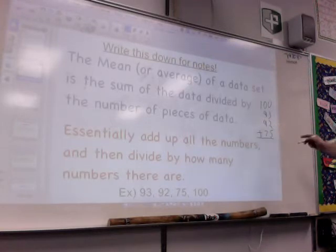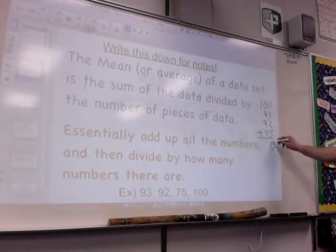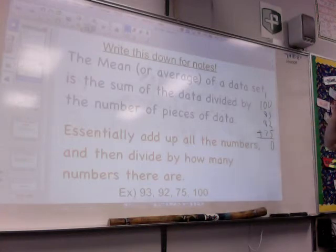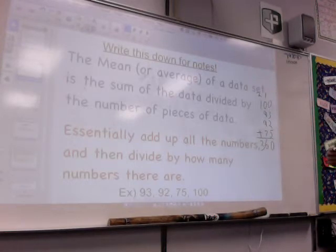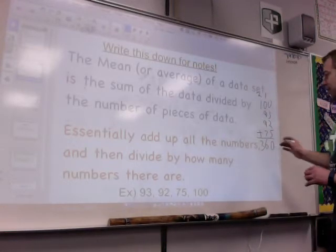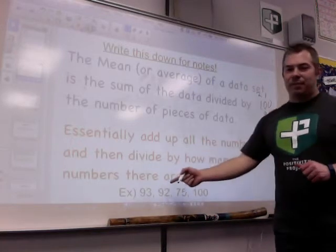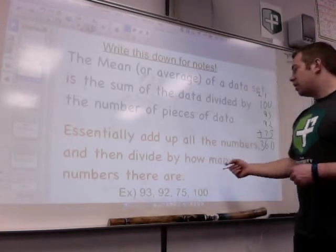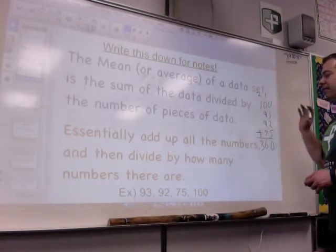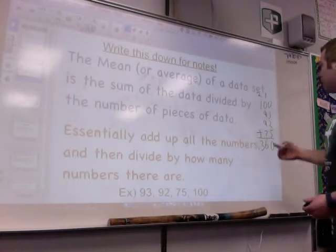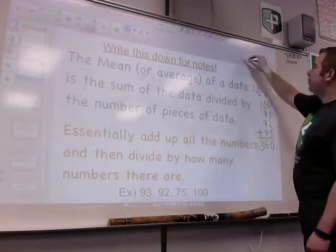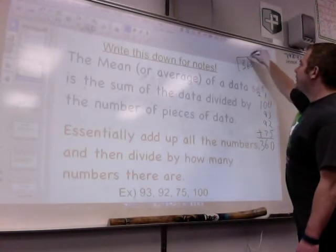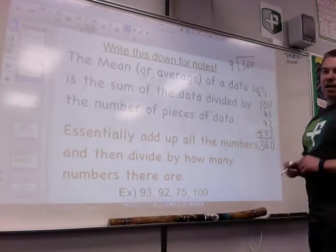Going to add all those up, I get 18, 19 plus 7 equals 26, and then 360. So the total points is 360. But there's the second step when finding the mean or the average. After I add up all my pieces, I divide by how many numbers there are. I had four numbers, 1, 2, 3, 4.